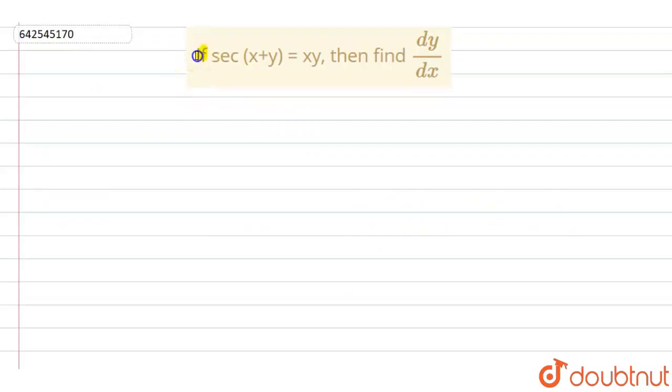Hello everyone, so the question is: if sec of x plus y equals xy, then find dy by dx. Okay, so let us proceed. It is given that sec of x plus y equals xy.